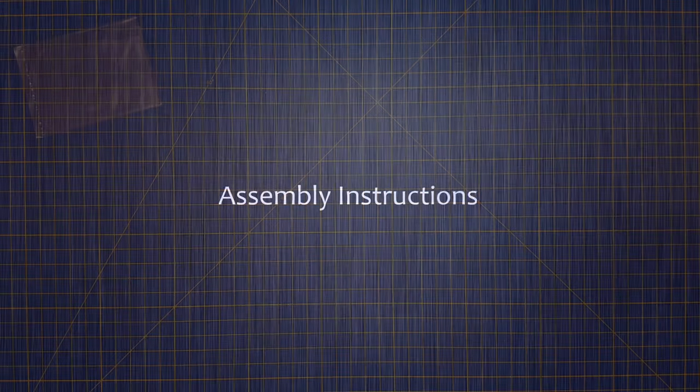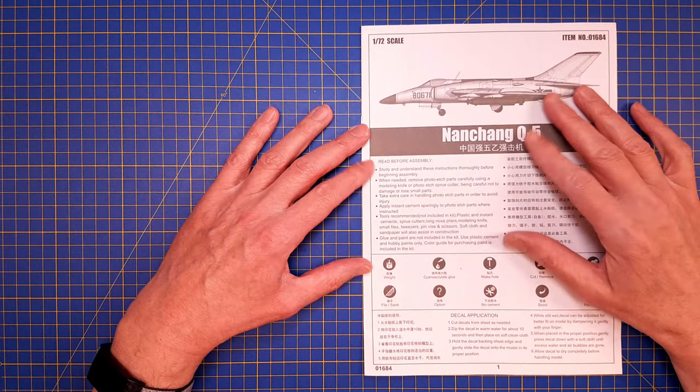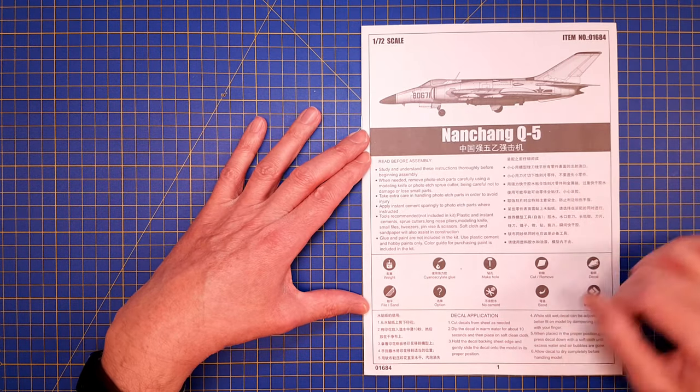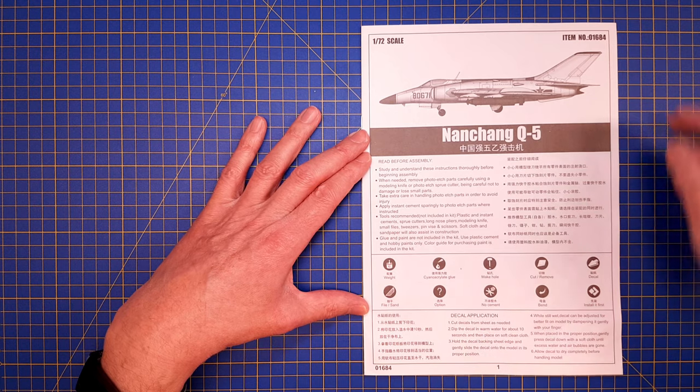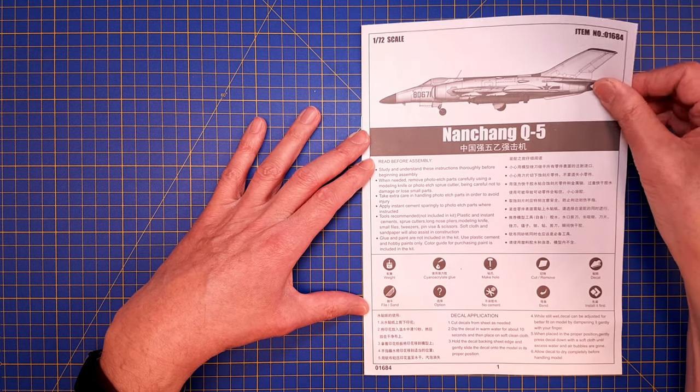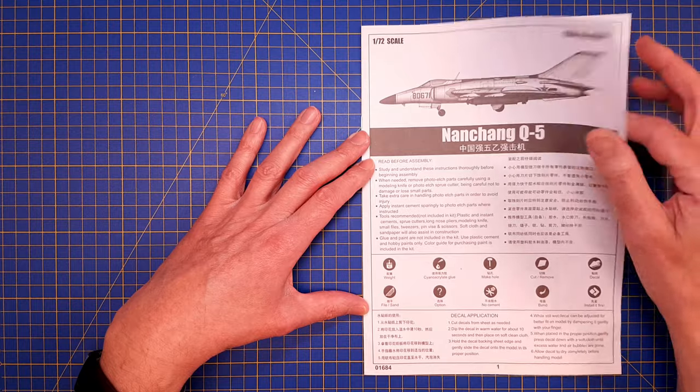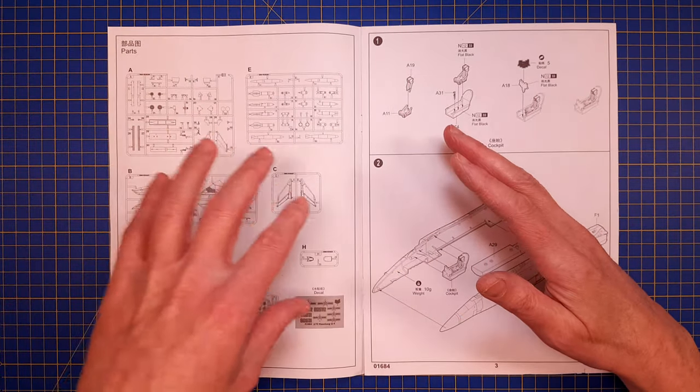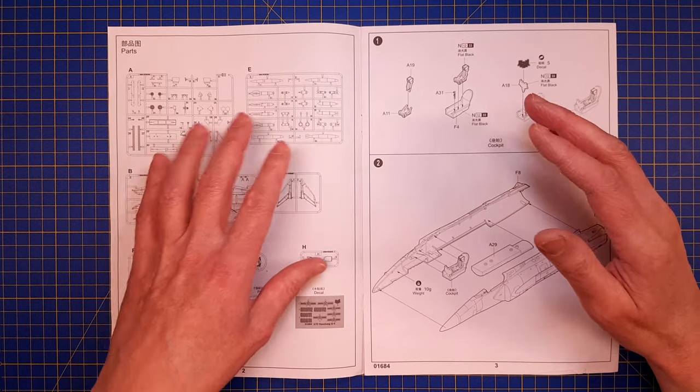If we start looking at the assembly instructions, we see on the first page an illustration of the aircraft and some basic scale modeling information with symbols for different steps and actions. On the second page, we have a sprue callout.